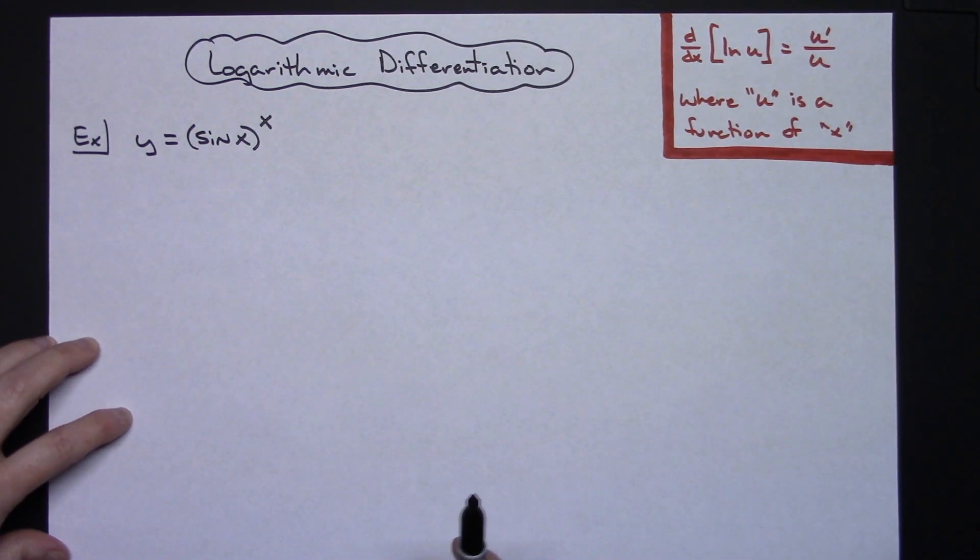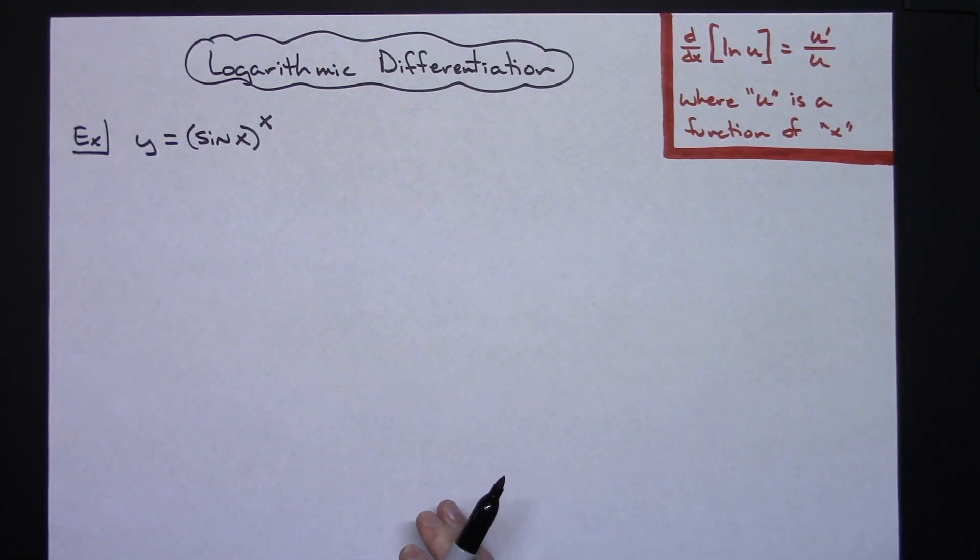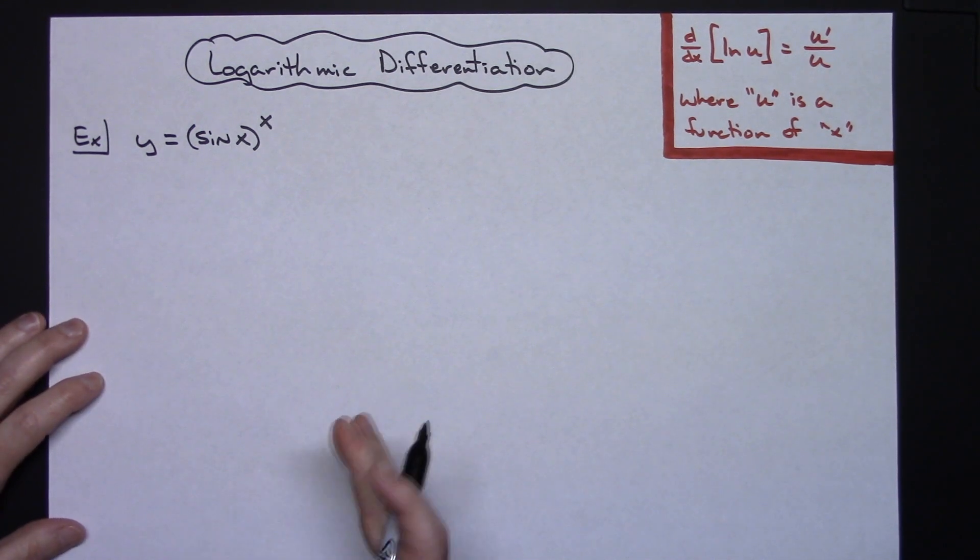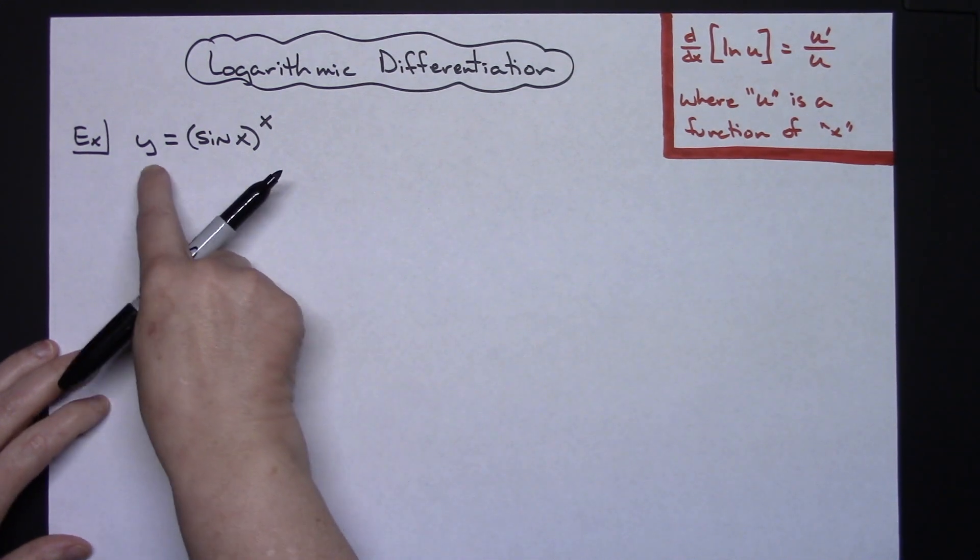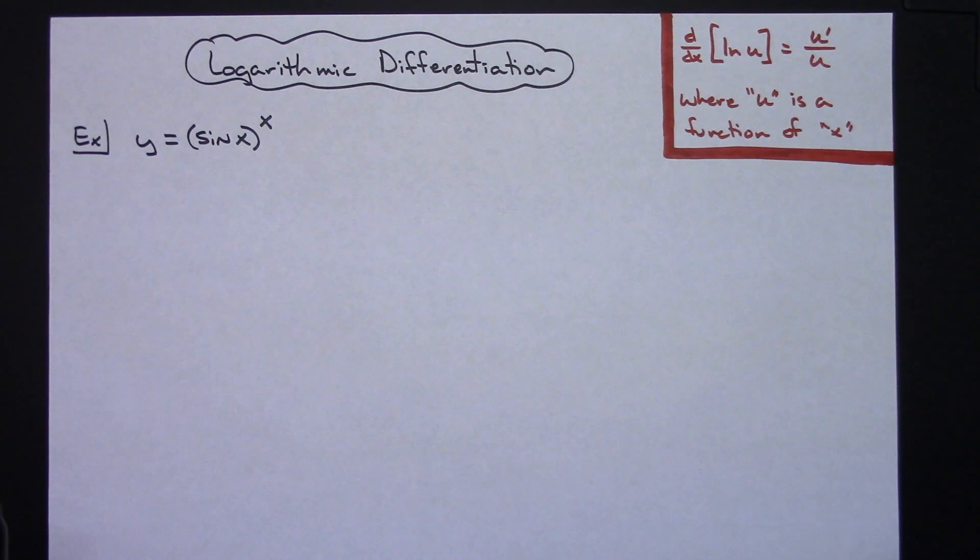I use these formulas so that we can clearly see where that chain rule is taking place. For logarithmic differentiation there is a set of steps that are going to be very helpful. I've got y equals sine x raised to the x.